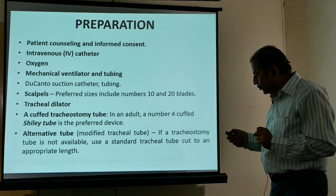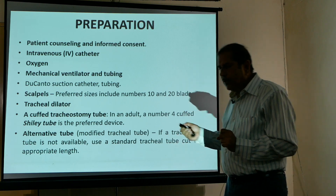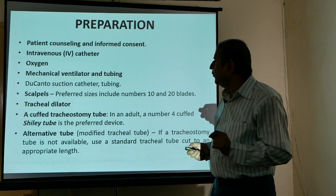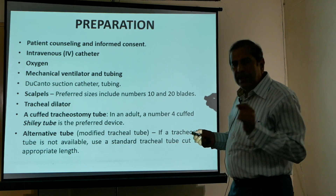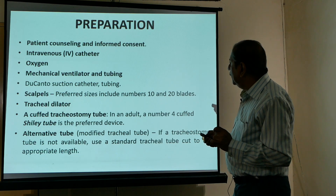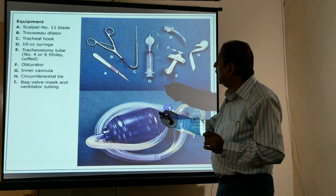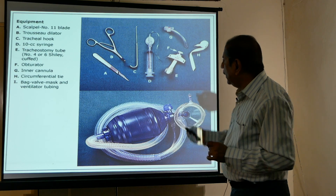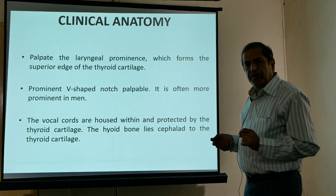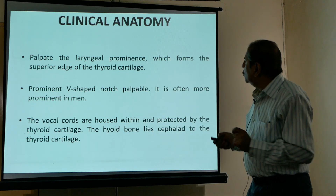Preparation must be done with all equipment already in the cart. Most of the time when there is a predicted difficult airway, you can take counseling and consent, but in an emergent scenario you have hardly any time and must proceed straight away. Equipment for cricothyroidotomy is available in kit form and readily accessible in the difficult airway cart.